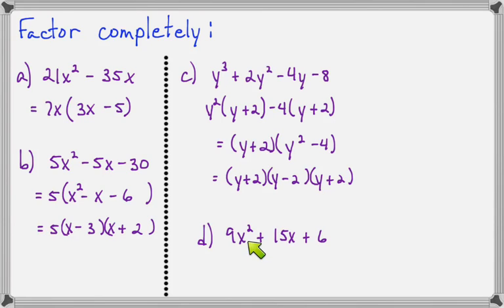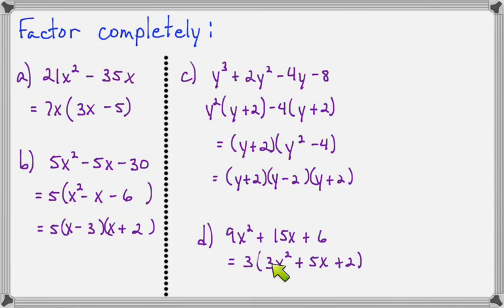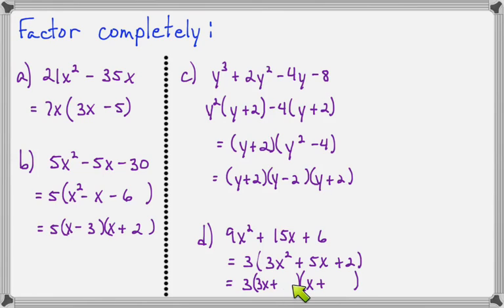One more: 9x² plus 15x plus 6. I see that 3 goes into all three terms, leaving 3(3x² plus 5x plus 2). Now factoring that trinomial into two binomials: first times first must be 3x², so that's 3x times x. The signs are both positive since the constant is positive. Last times last must be 2, so that's 2 times 1. Checking outer plus inner: 3x plus 2x equals 5x, which is correct. Neither factor can be factored further, so this problem is finished.